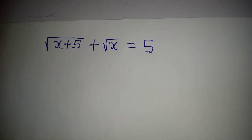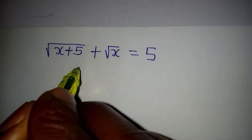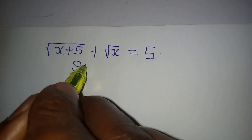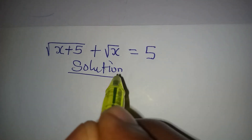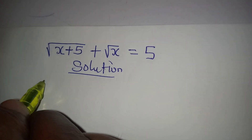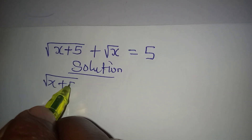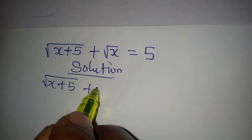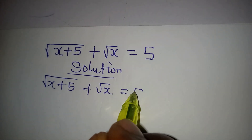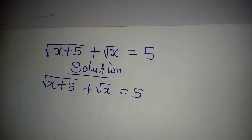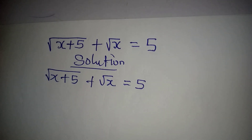Hello everyone, let's deal with this problem right away. We have square root of x plus 5, plus square root of x, equal to 5. This is very simple, but here is what we are going to do.